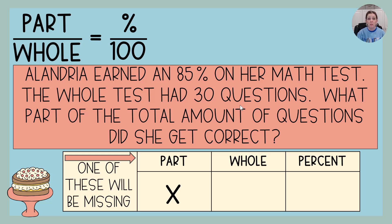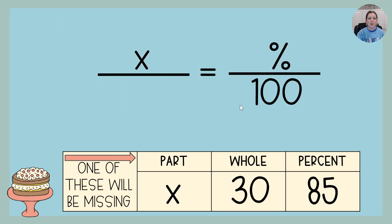The whole, how many questions were on the test? 30. And then what did she make? How many did she get right? 85%. So let's use it and fill in our pieces. And then we're going to cross-multiply.